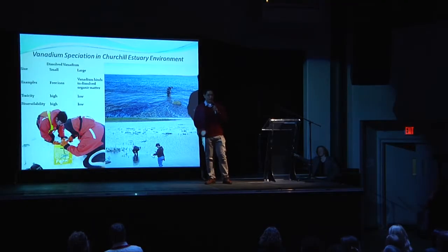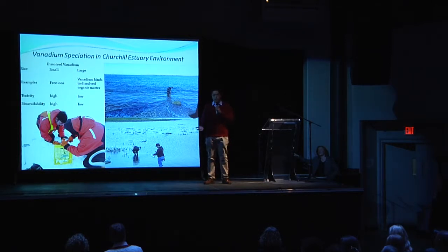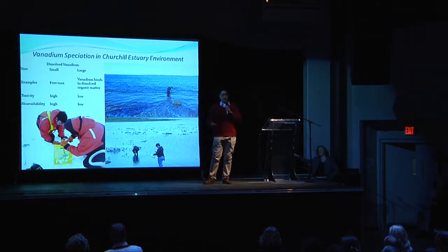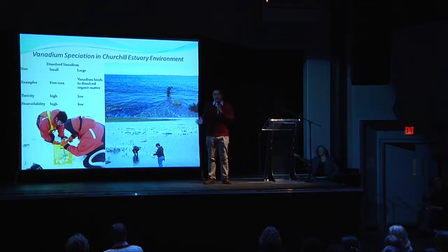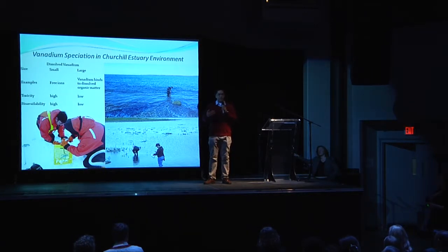Finding number one: small dissolved vanadium species in the estuary is five times higher than in the river, while large dissolved vanadium species in the estuary is 50 times higher than in the river. The reason is probably because in the two different types of environment, the vanadium from sediment leaching are quite different.